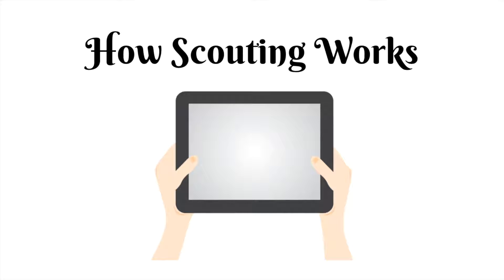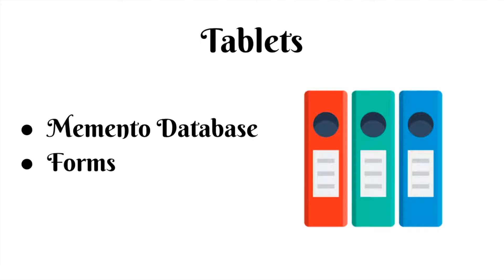Scouting is a term for collecting data about other teams and their robots at competitions. In Team 1403, we use tablets with Memento database apps that have forms. These forms ask the team member to fill out information based on the FRC game announced that year, which the strategy team edits each season before the competitions. These forms are copied on all tablets for the team.